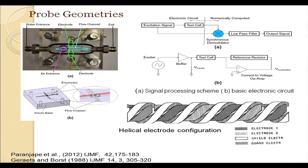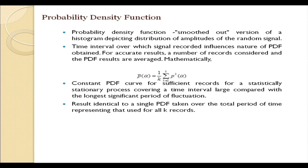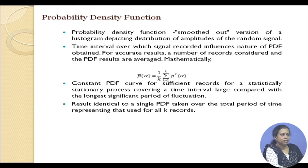Since these probes were not readily available, apart from the raw signals, researchers have usually performed probability density function (PDF) analysis of the random signals. As already discussed, the PDF curves obtained from an optical probe — the PDF curves are nothing but the smoothed-out version of a histogram which depicts the distribution of the amplitude of the random signals. The time interval over which the signal is recorded influences the nature of the PDF.